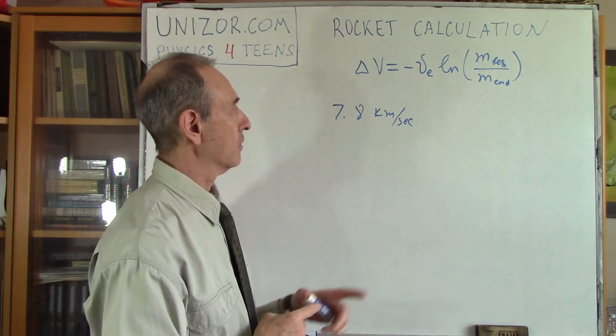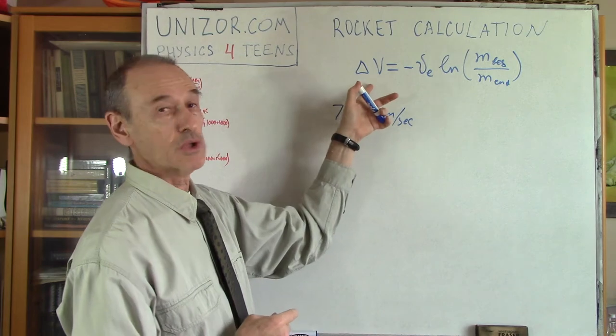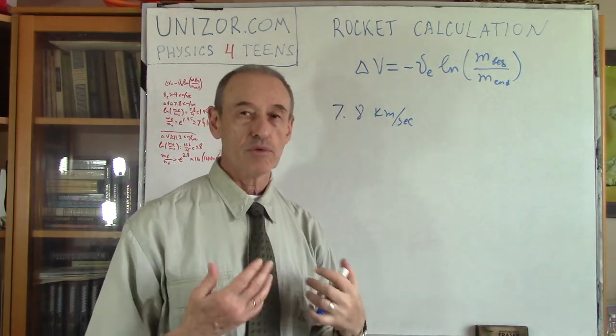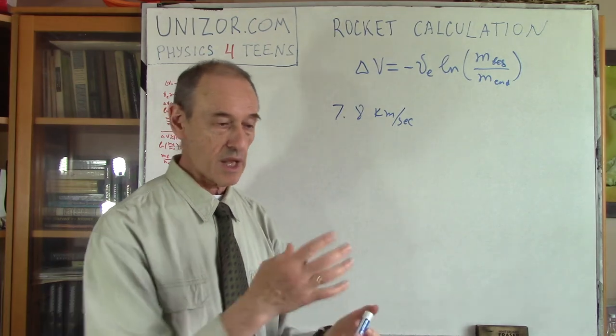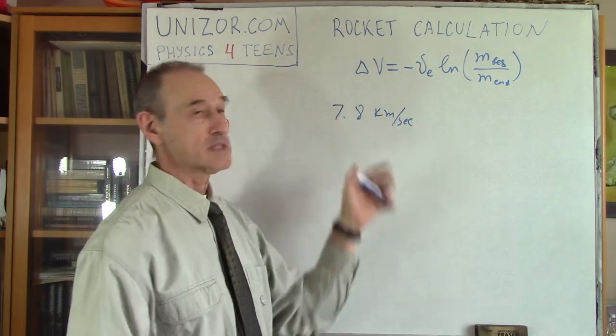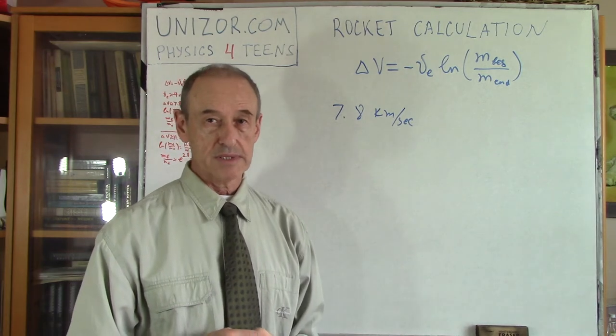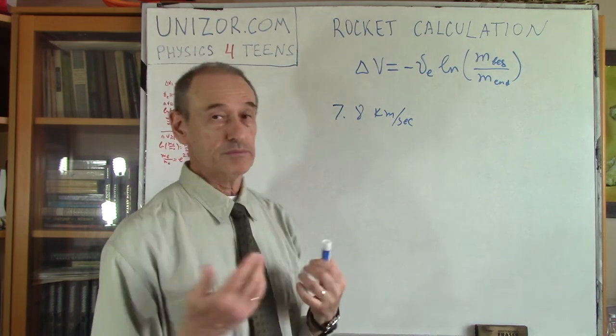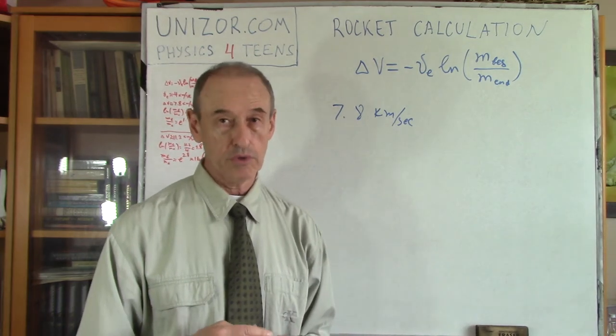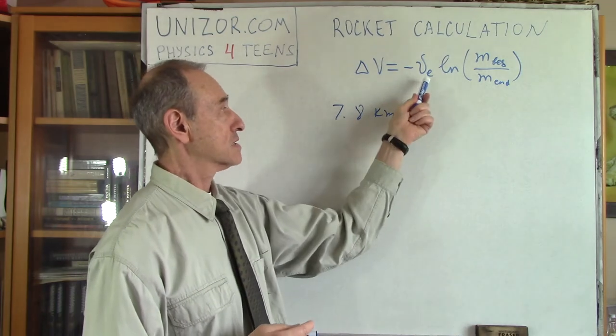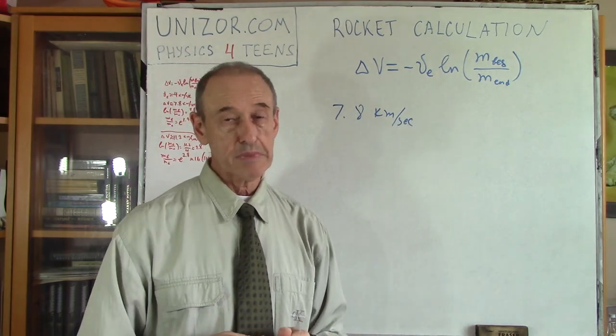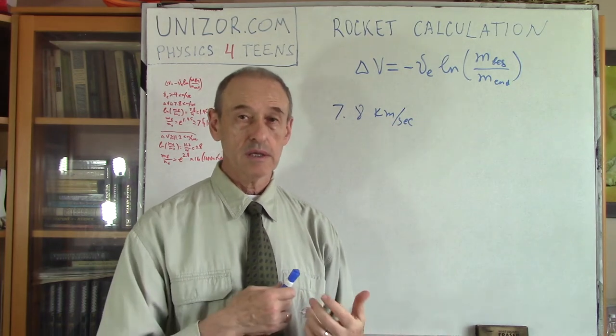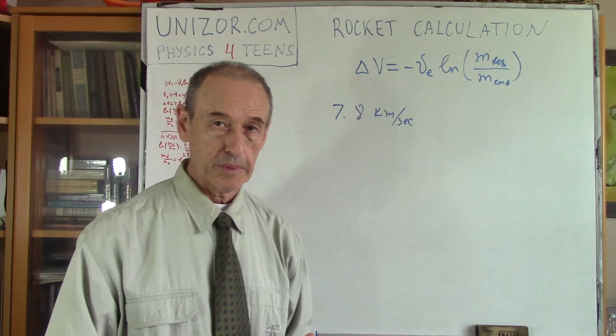So we know this, which means we know delta V, because the initial speed of the rocket is obviously zero. Starting from zero, we have to reach the speed 7.8 kilometers per second during a certain amount of time. So my question is, what kind of, how much fuel do I need? This is something which must be specified.